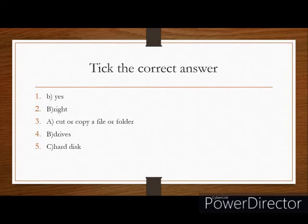Number 4: where are all the files and folders stored? All the files and folders are stored under drives. The answer is option B. Question number 5: Drive C stores what — floppy disk, compact disk, or hard disk? The answer is option C, hard disk.